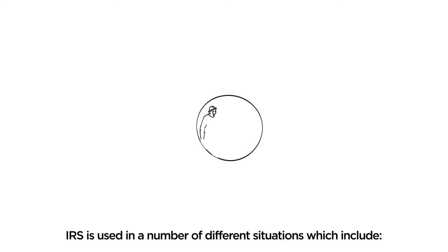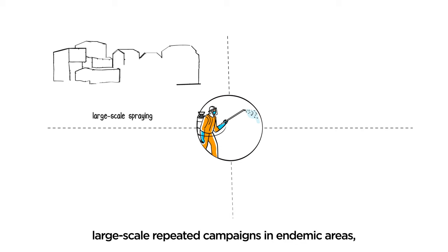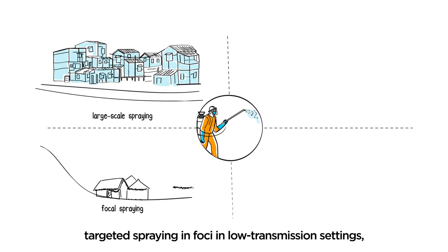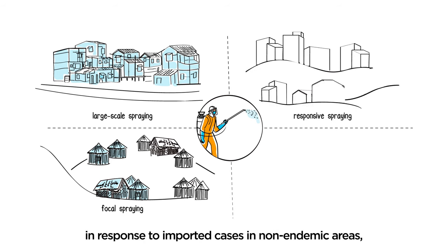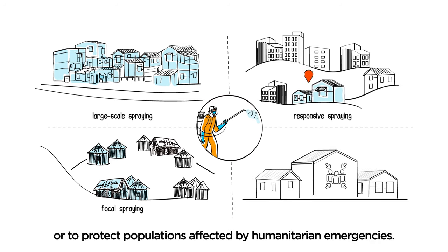IRS is used in a number of different situations, which include large-scale repeated campaigns in endemic areas, targeted spraying in foci in low transmission settings, in response to imported cases in non-endemic areas, or to protect populations affected by humanitarian emergencies.